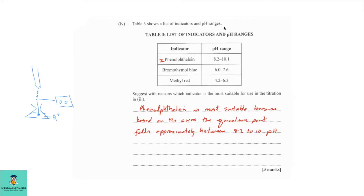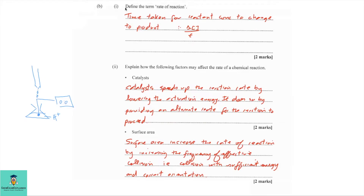Part four — Table 3 shows a list of indicators and their pH ranges: phenolphthalein, bromothymol blue, and methyl red. Suggest with reason which indicator is most suitable for the titration in part three. Phenolphthalein is most suitable because the equivalence point falls approximately between pH 8.2 and 10. This is a weak acid–strong base titration, and phenolphthalein is the most suitable indicator for that combination.